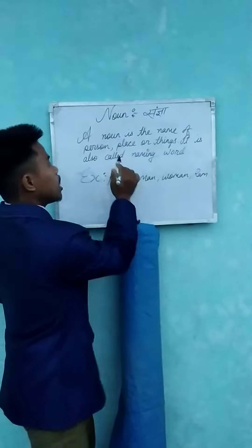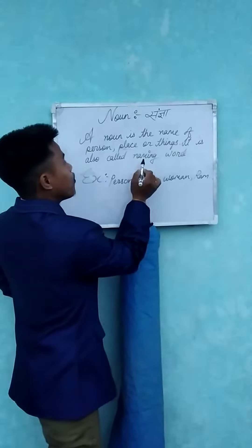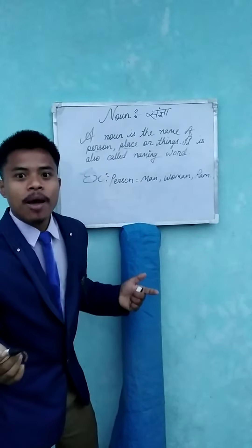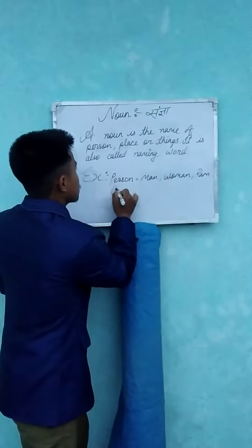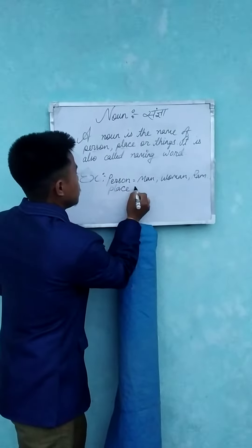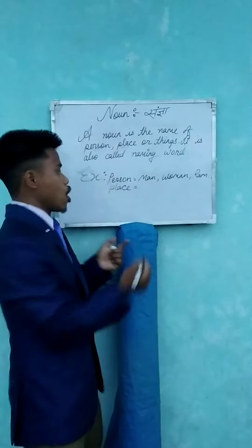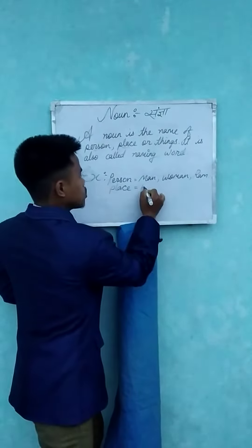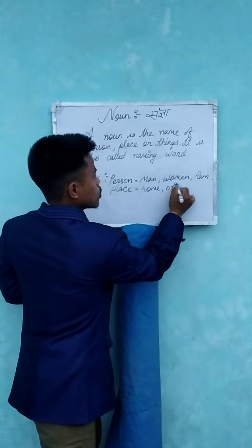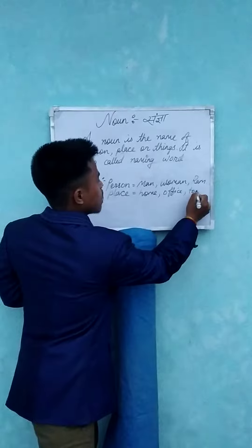Now let's look at the other category: place. What is place? Place means a location or area. What is the name of the place? For example: home, office, town, etc.